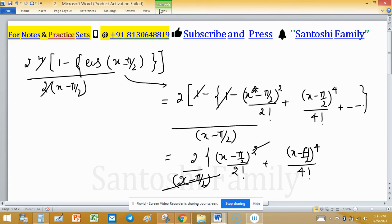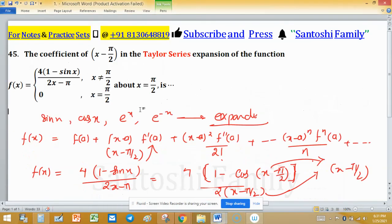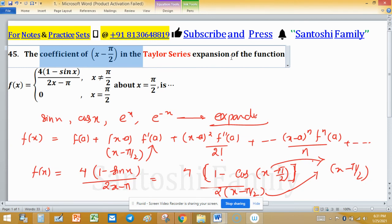This is the (x - π/2) term only. This is we need, (x - π/2) having the coefficient 2/2! = 1. So the coefficient of (x - π/2) in the Taylor series expansion of this function is 1.